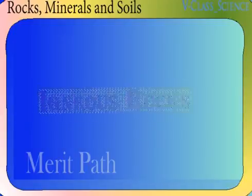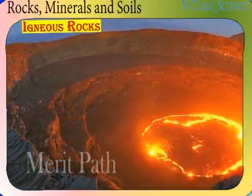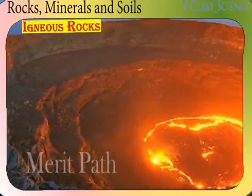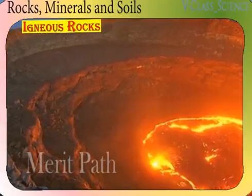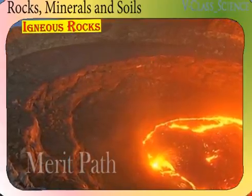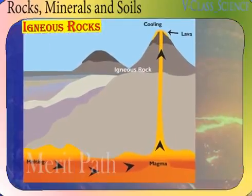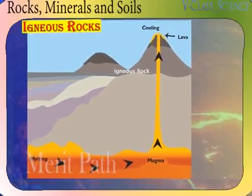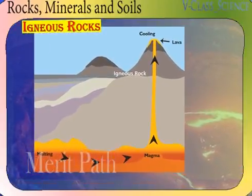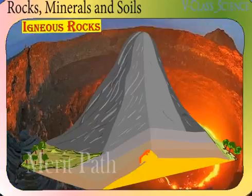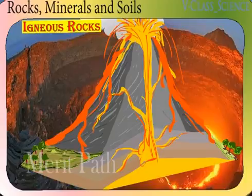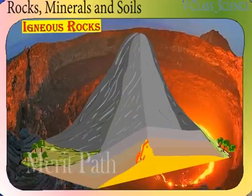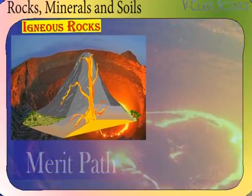The igneous rock. Deep inside the earth, it is very hot that the rocks melt. This material is known as magma. The magma, which is a melted material, gets pushed and reaches the surface of the earth. This is called the lava.